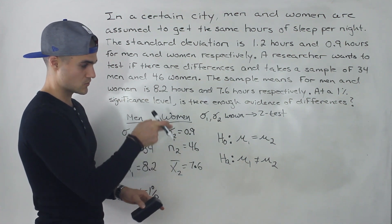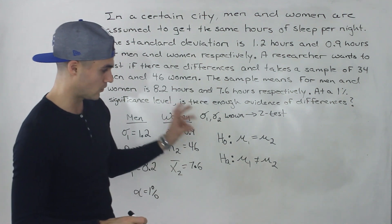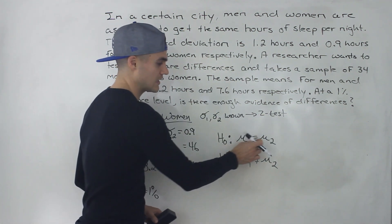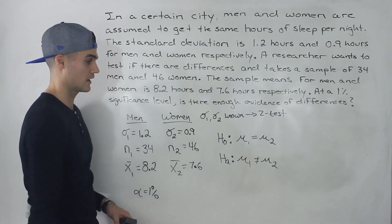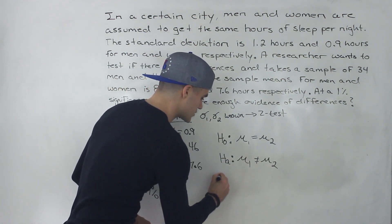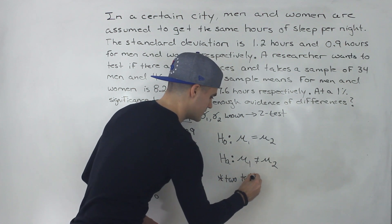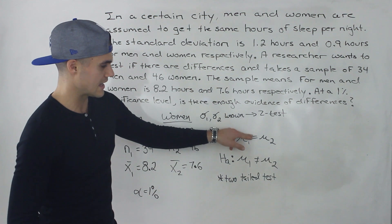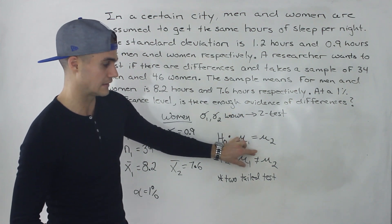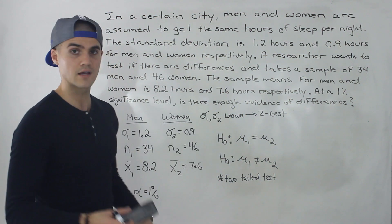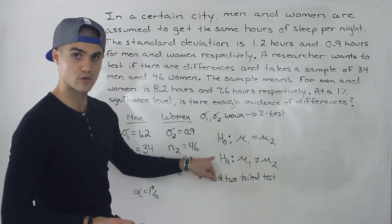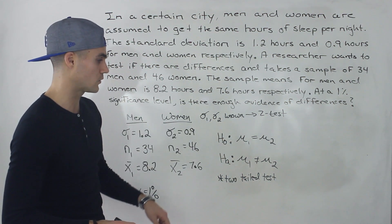Notice the difference between two-sample and one-sample hypothesis testing. In one sample, the population parameter equals a specific number, but here it equals the other population parameter. Because there's an equal sign in the null hypothesis and not-equals in the alternative, this is going to be a two-tail test. If we had less-than-or-equal-to and greater-than signs, it would be a one-tail test — we'll do examples like that too.